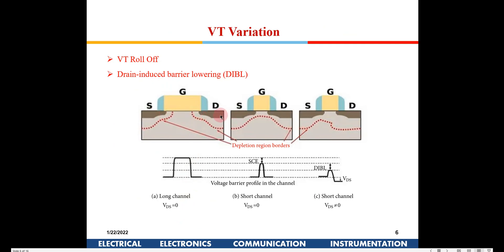VT roll-off is observed as follows: for a long channel device with a source and drain N-region in a P substrate, depletion regions form at the source and drain junctions. For a long channel, this depletion is negligible compared to the channel length and doesn't affect the channel. But for a short channel device, the depletion regions from both junctions can extend across the entire channel region.